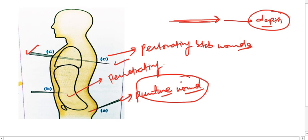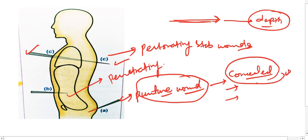Puncture wounds are mostly caused by sharp pointed objects. Sometimes they may be concealed puncture wounds — in the nape of the neck for puncture of the medulla oblongata, or over concealed areas like the inner canthus of the eye, the axilla, the vagina, or the anus. These are known as concealed puncture wounds. Sometimes they occur at the anterior and posterior fontanelles as a method of infanticide.